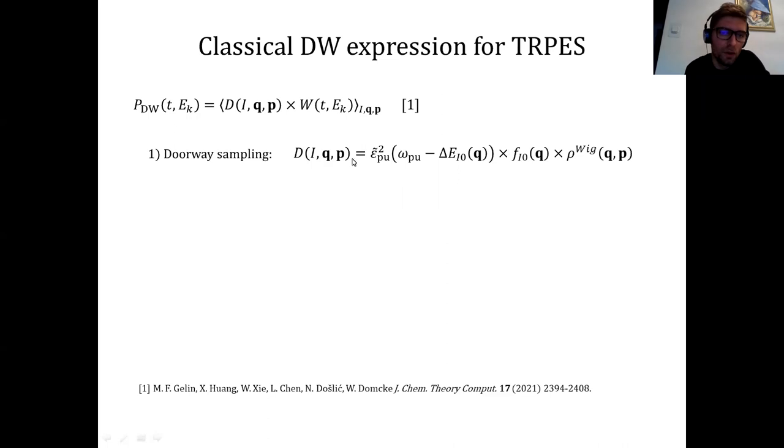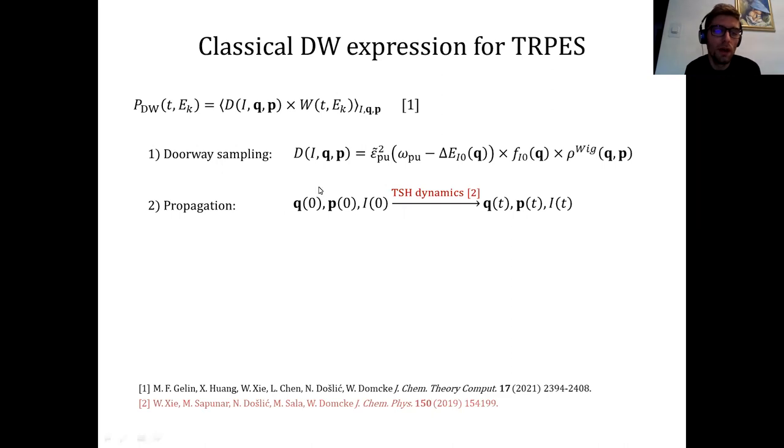Okay, then after you sampled your classical points, you need to propagate them in the excited state manifolds. You can do it in many different ways. The most obvious way is surface hopping dynamics, in which you propagate your classical points on adiabatic surfaces, but you allow your molecule to change the currently populated state in time at each propagation time step.